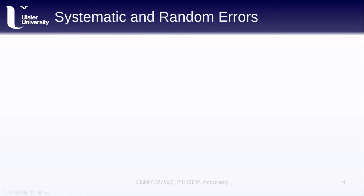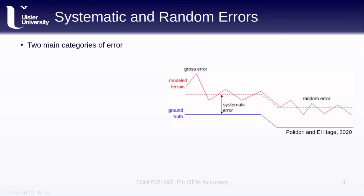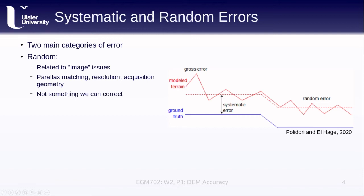For error and accuracy analysis, we have two main categories of error. The first is random error, which is typically related to image issues, so inability to do correlation in our air photos, as one good example, ends up introducing random errors into the final elevation product. You might have seen this with some noise in the DEMs that you generated last week. We might also have issues with parallax matching, resolution, the acquisition geometry. All of these can contribute to the random errors.